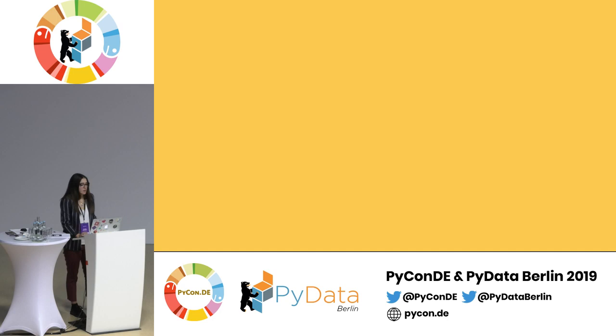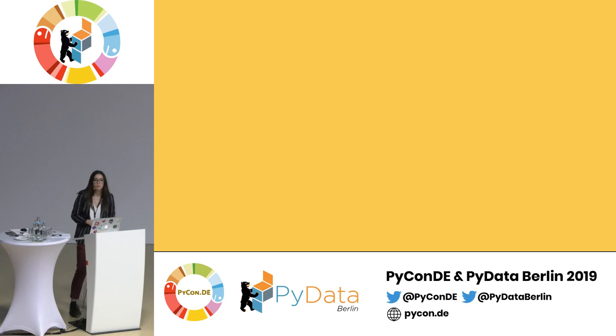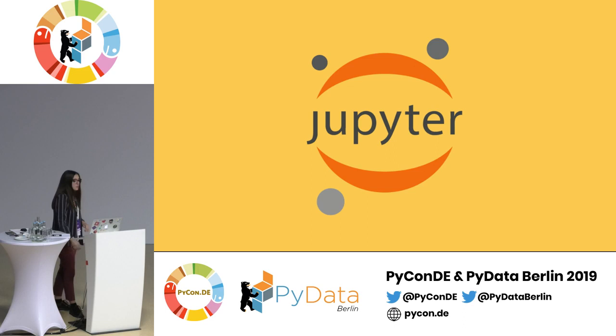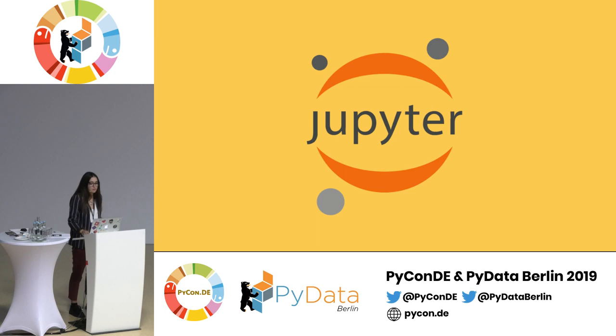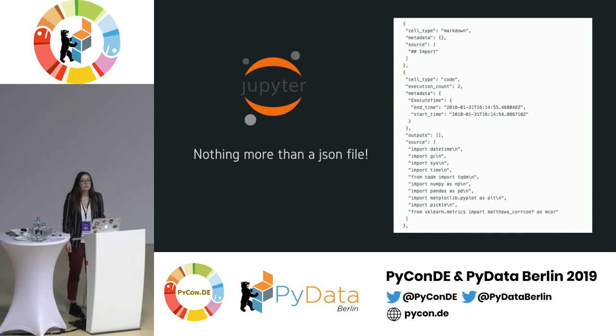One of the first things that comes to mind when thinking about versioning is code. And in particular, one of the first things that comes to mind when thinking about data science is Jupyter Notebook — one of the most useful tools for experimenting in data science. They're great; they contain source code, markdown, plots, and it's very handy to have all of these in one place. But the reality is that you cannot manage versioning as you would with regular Python scripts, because at the very end they are nothing more than a JSON file, and Git is not able to understand the structure of your notebook.